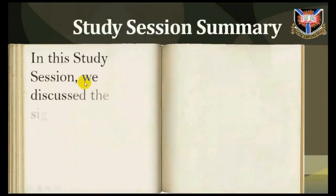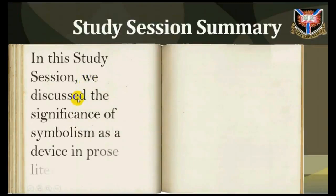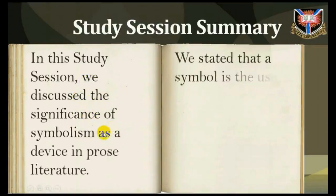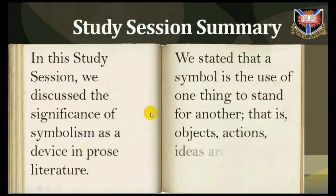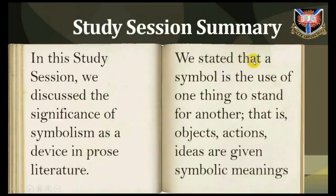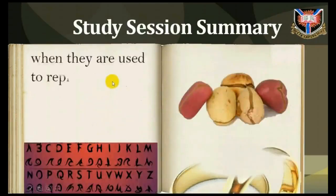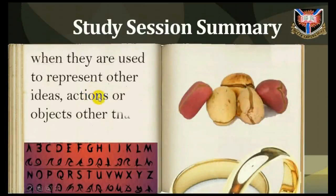In this study session, we discussed the significance of symbolism as a device in prose literature. We stated that a symbol is the use of one thing to stand for another — that is, objects, actions, and ideas are given symbolic meanings when they are used to represent other ideas, actions, or objects other than themselves.